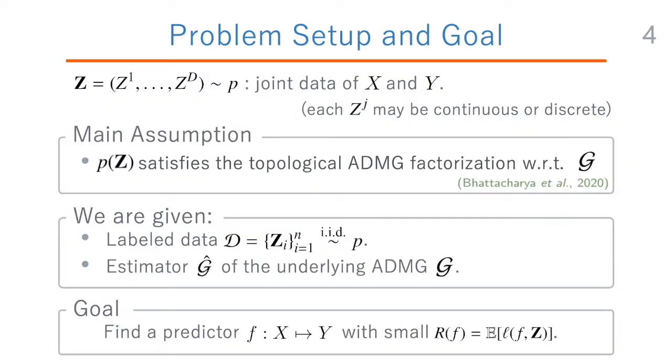As a basic setup, we consider random variables x and y, and we consider predicting y from x. The joint vector of x and y is denoted by z, when we do not distinguish which variables were x and which one was y. And in this work, we will assume that the data distribution obeys some causal graph, and that we are given an estimated causal graph.